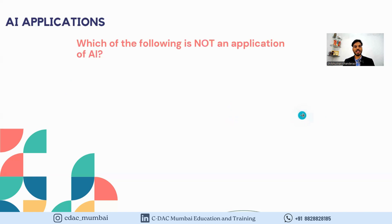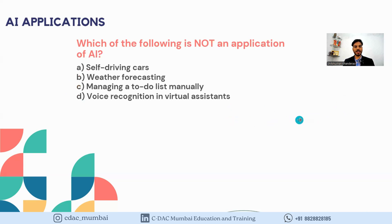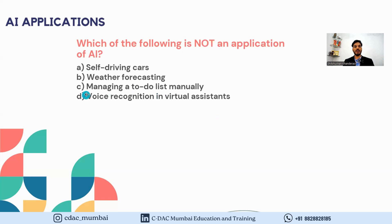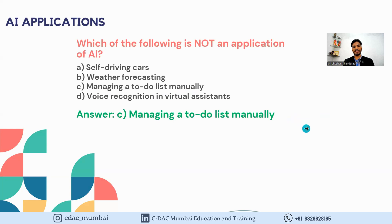The final question is on AI applications: which of the following is NOT an application of AI? Options are: A) Self-driving car, B) Weather forecasting, C) Managing a to-do list manually, D) Voice recognition in virtual assistants. Most options are AI-relevant, but one involves purely manual work — so the answer is C, managing a to-do list manually.